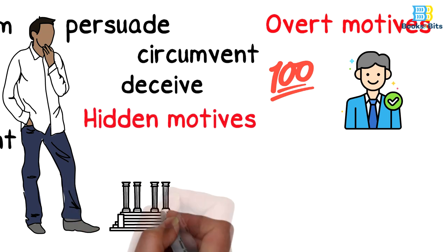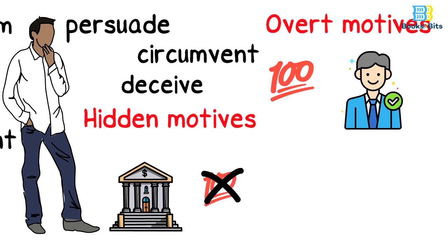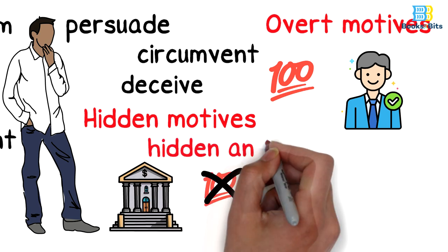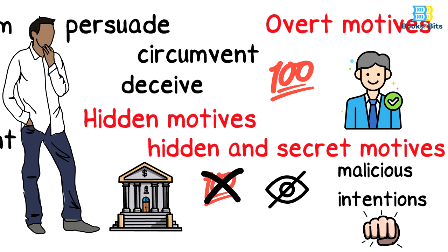Hidden motives, for example, what banks do, as they are not always clear in everything they do with their customers. Hidden and secret motives: we are talking here about malicious intentions that some people use against us.